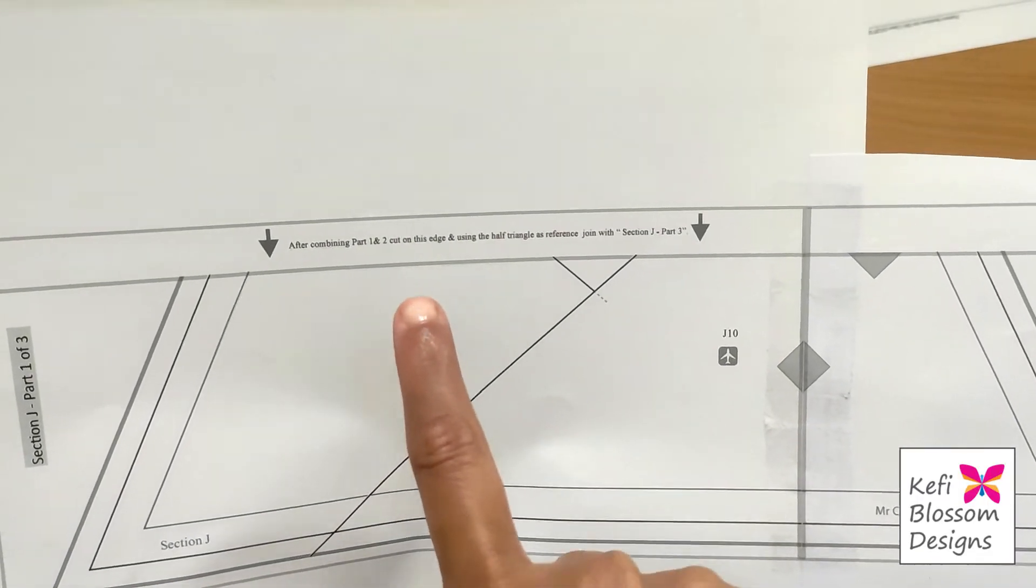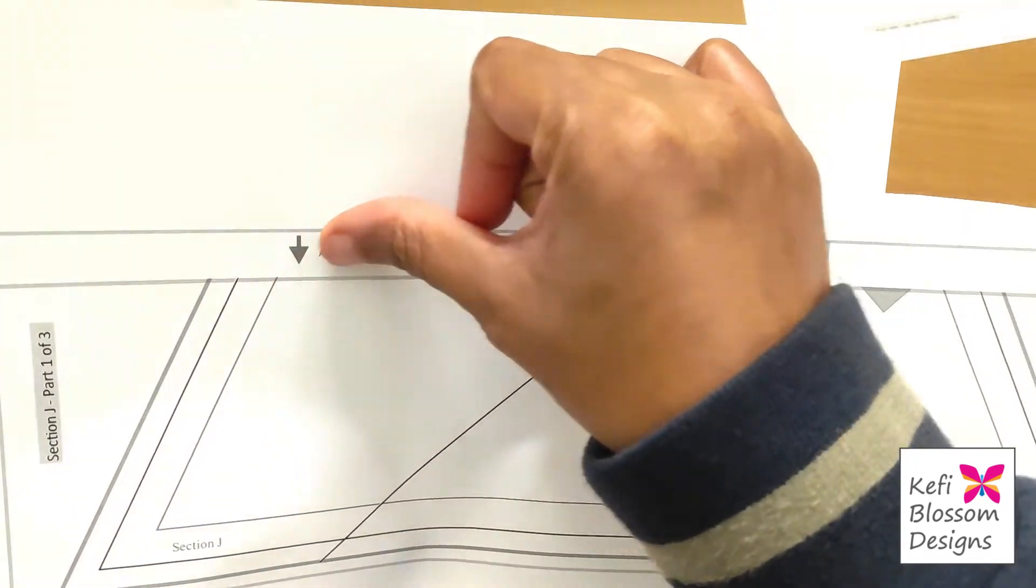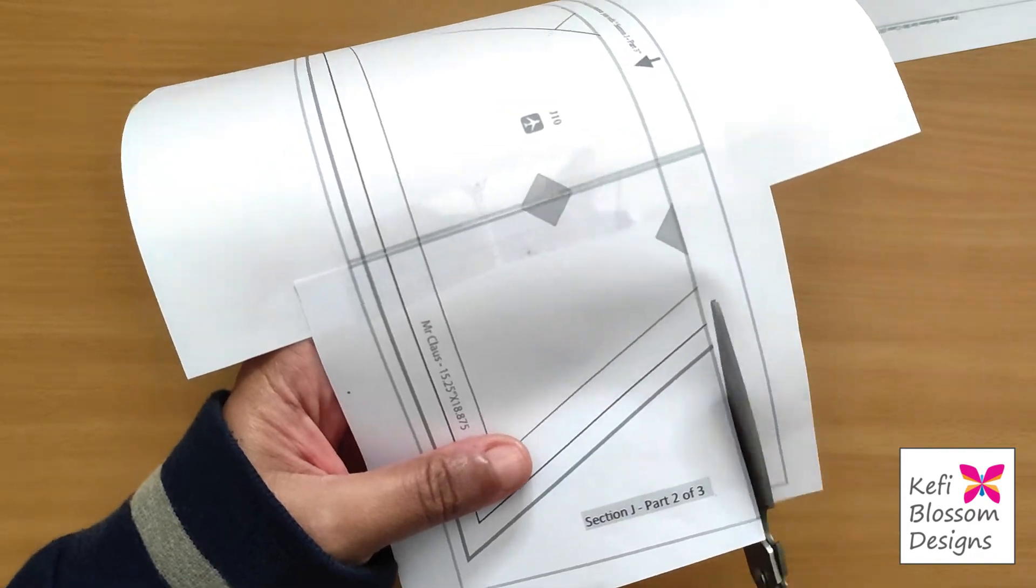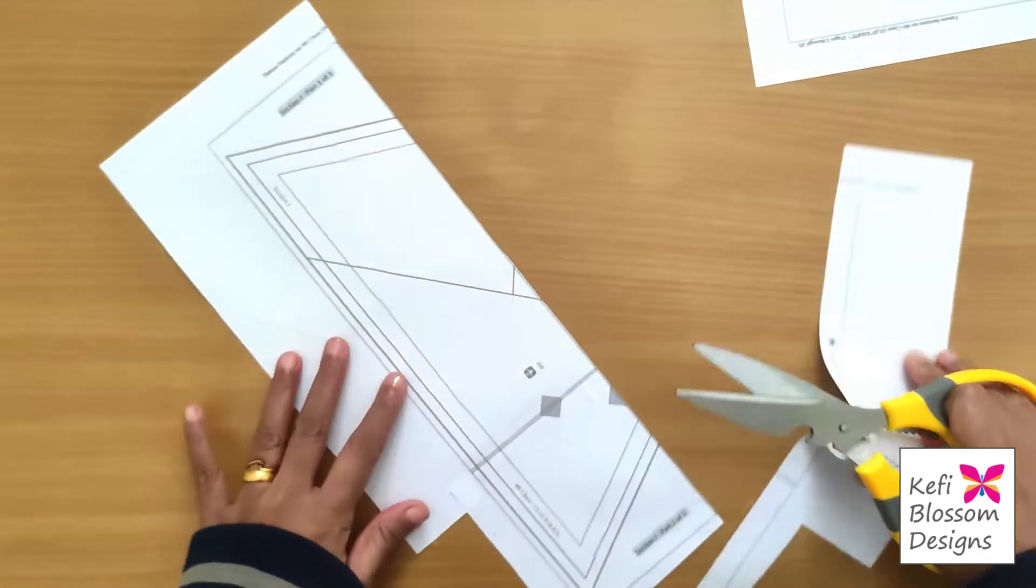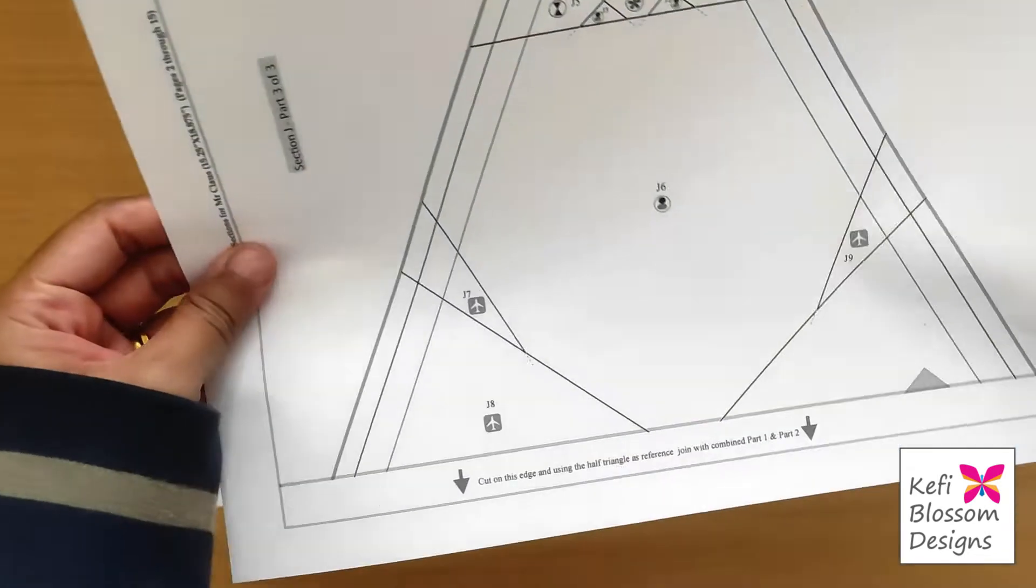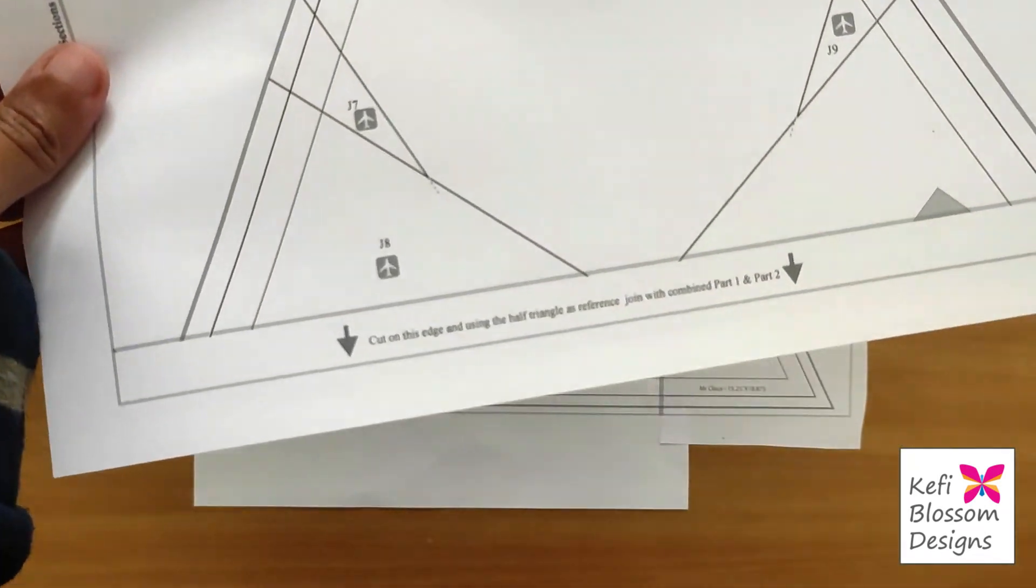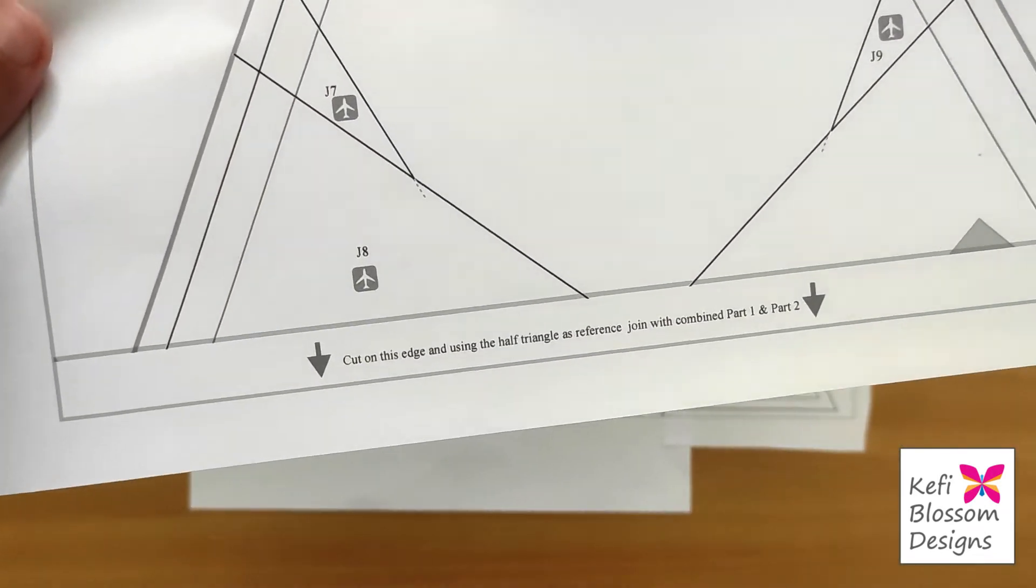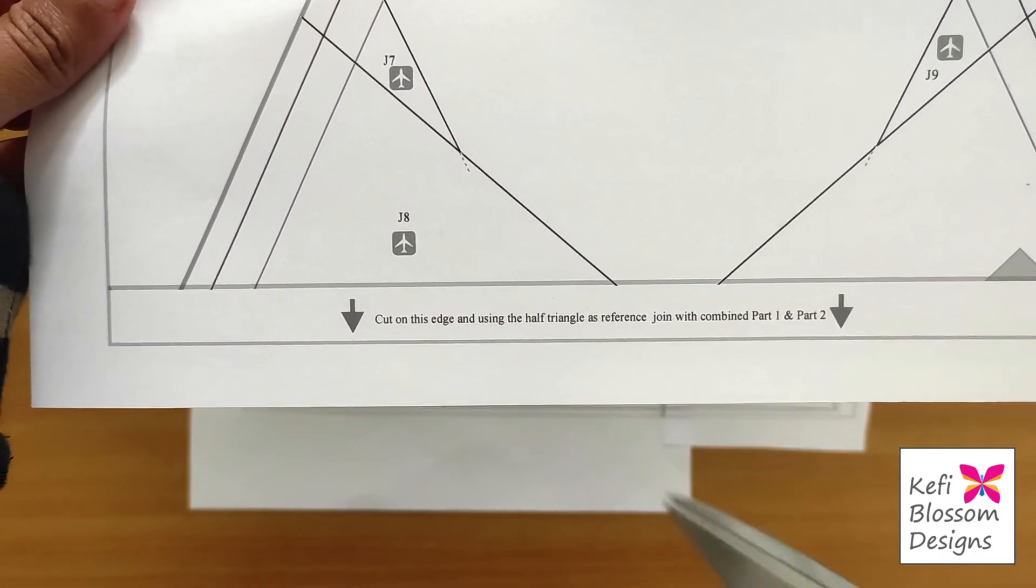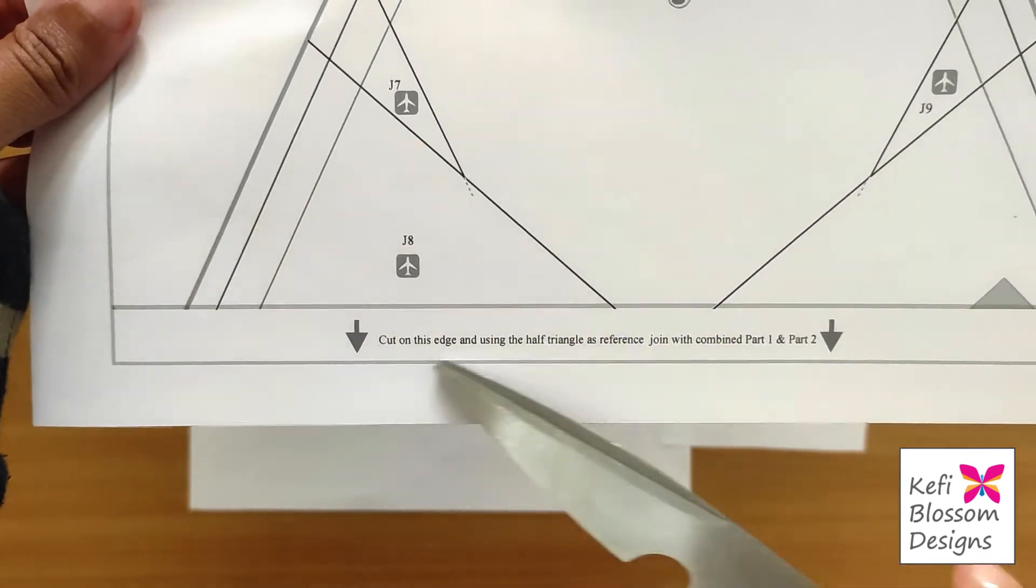So now, as I read in the instruction earlier, I have to cut at this edge and then join part three. Now I'll take part three and then read the instruction. You need to read the instructions to know which edge you need to cut. So in this case, I need to cut on this edge.